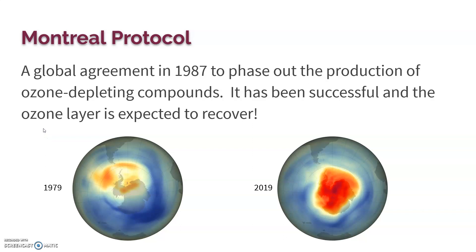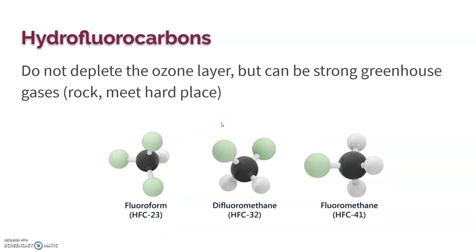We need ozone and it's bad to have these ozone-depleting compounds. So in 1987, a bunch of countries came together in Montreal and agreed to stop producing them. This is one of the very few times in this entire class we get to have a positive thing, because it has worked. It came from a global agreement to fix a problem, and it worked. We have seen a tremendous decrease of ozone-depleting compounds.